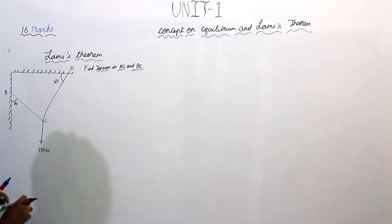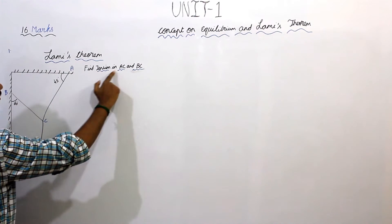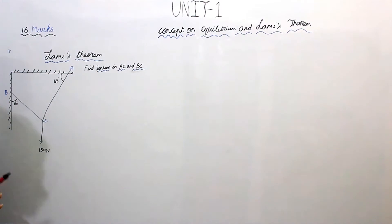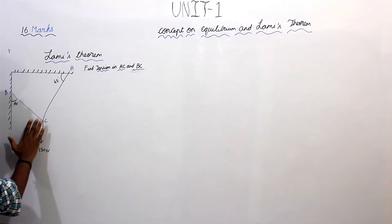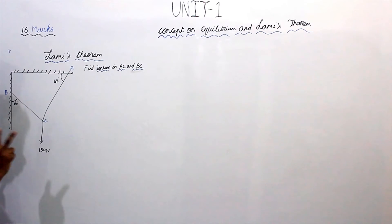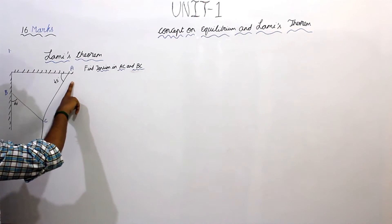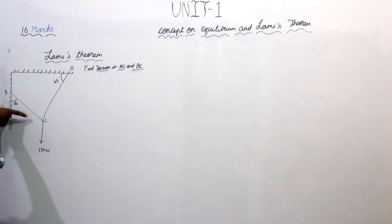In this problem, they have asked us to find tension in AC and BC. In this column, there are three forces happening: one is the weight, one is the tension AC or force AC, and one is BC.